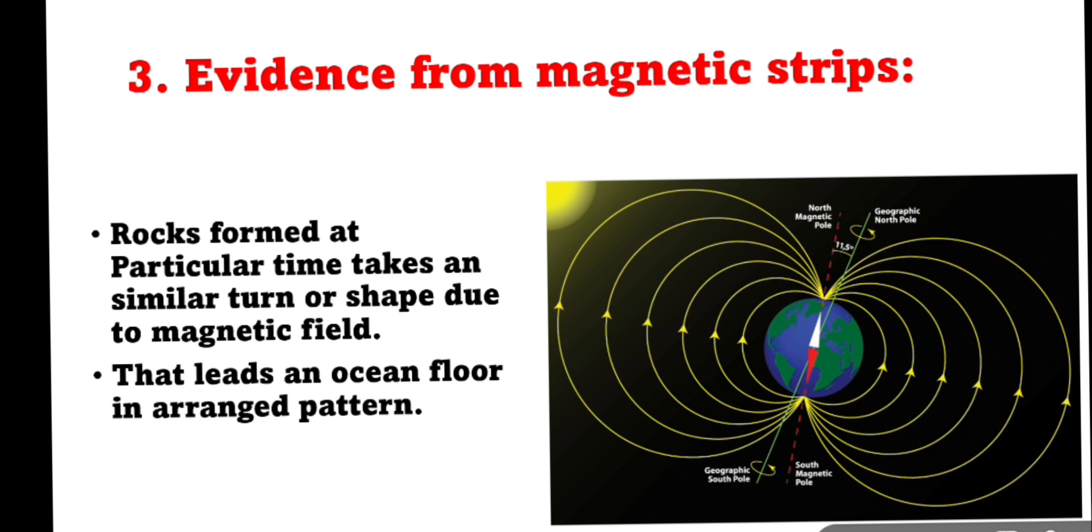The third evidence is evidence from magnetic strips. Rocks formed at particular times take a similar tone or shape due to magnetic field that leads to ocean floor in an arranged pattern.